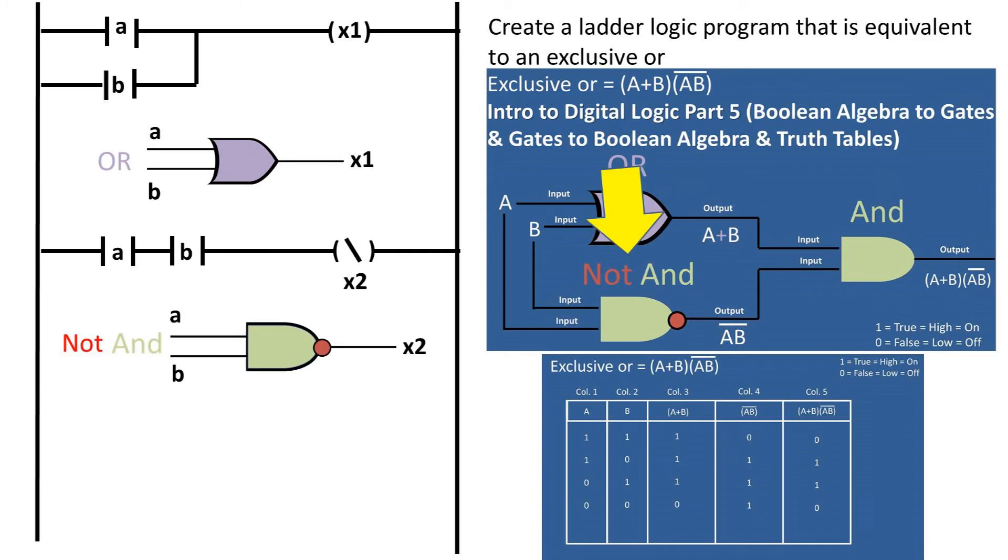Next, we need to make a NOT AND. I did this by taking two normally open contacts for A and B and placing them in series. This is connected to a normally closed coil, X2. So when a true signal is registered at the coil, it powers down the coil.